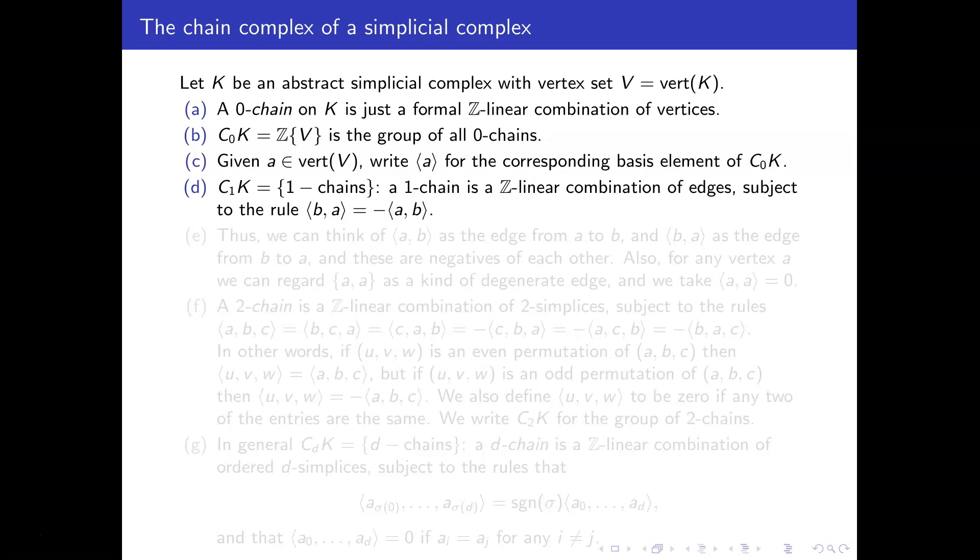So we have 1-chains pointy bracket ⟨a,b⟩ or pointy bracket ⟨b,a⟩, but we have this rule that pointy bracket ⟨b,a⟩ counts the same as minus pointy bracket ⟨a,b⟩. So pointy ⟨a,b⟩ is the edge from a to b, pointy ⟨b,a⟩ is the edge from b to a, and in this, in the group C_1(K), these count as negatives of each other.